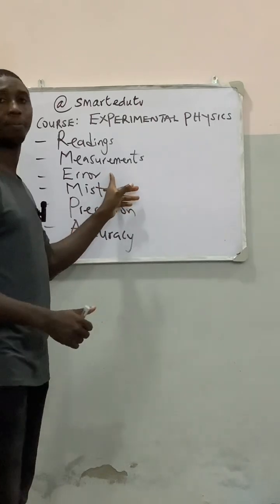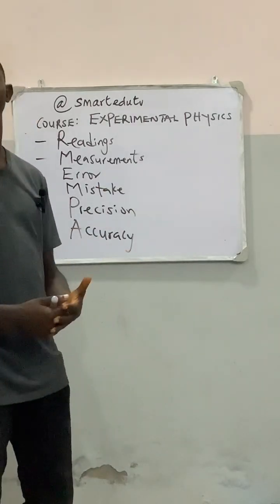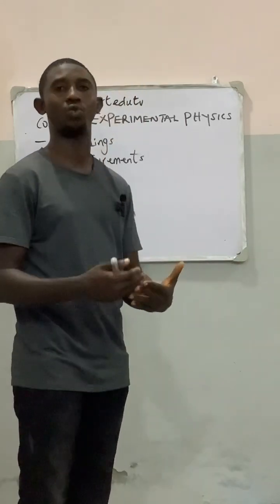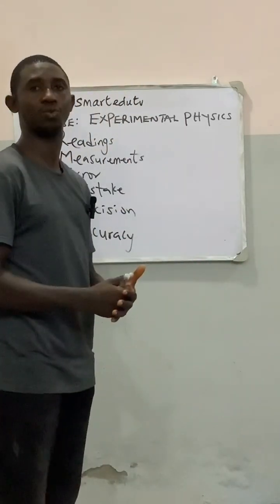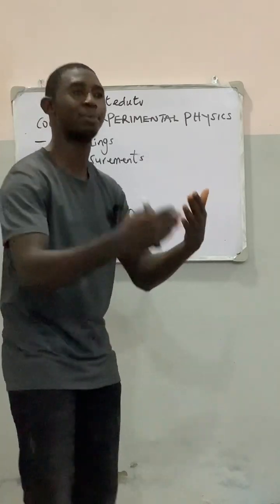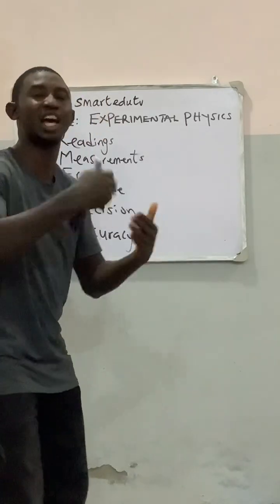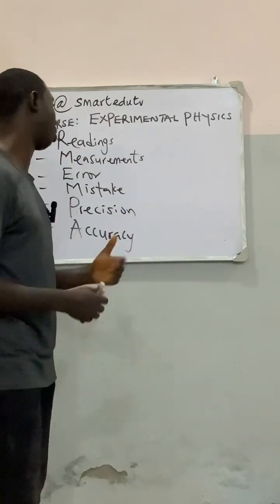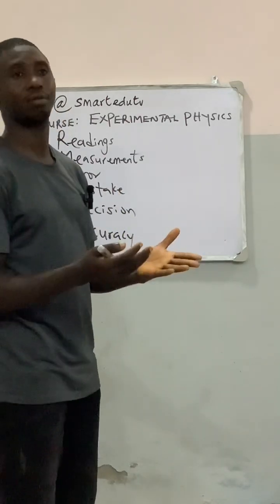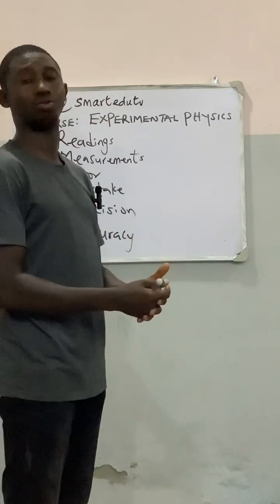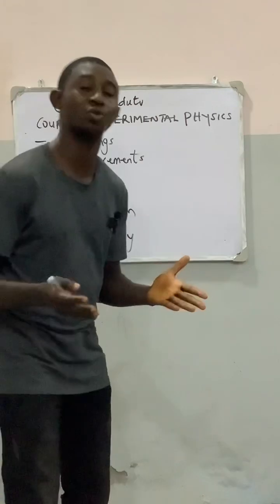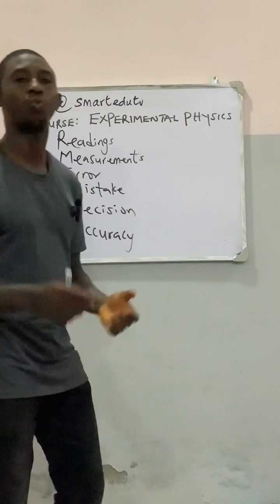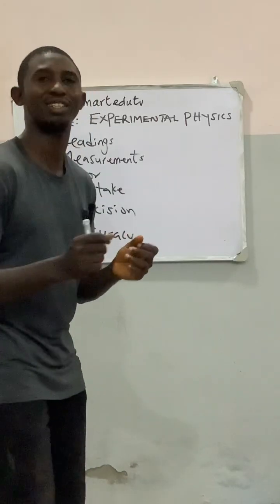The third one, error. What is an error? Error is simply the difference between the measured value and the actual value, the true value. In an experiment, error is allowed. Why? Nobody is perfect. There is no way we are going to perform experiments without making error. So error is allowed in experimental physics.